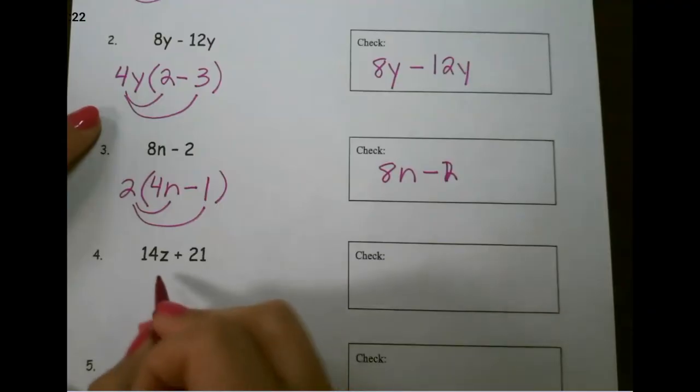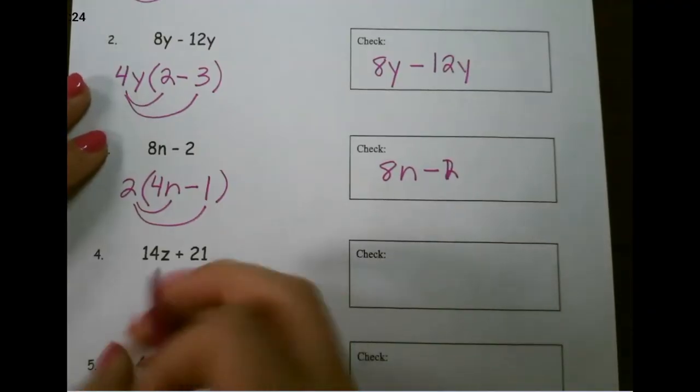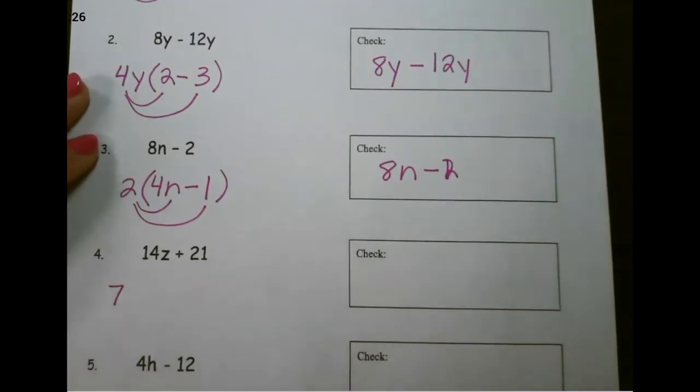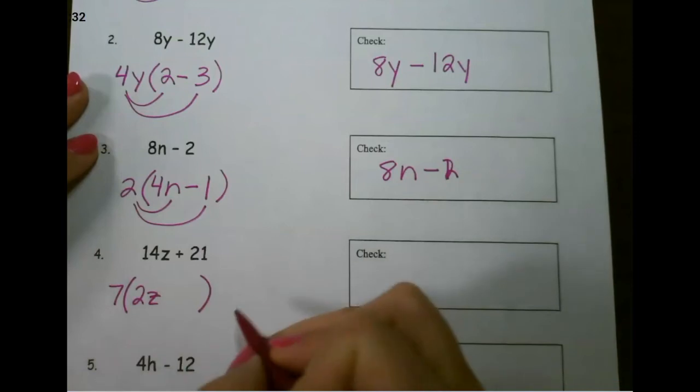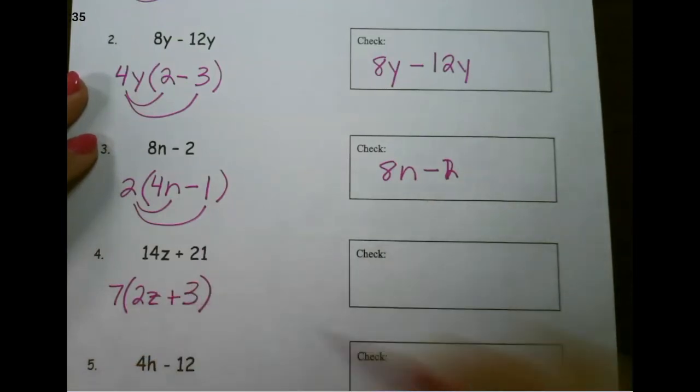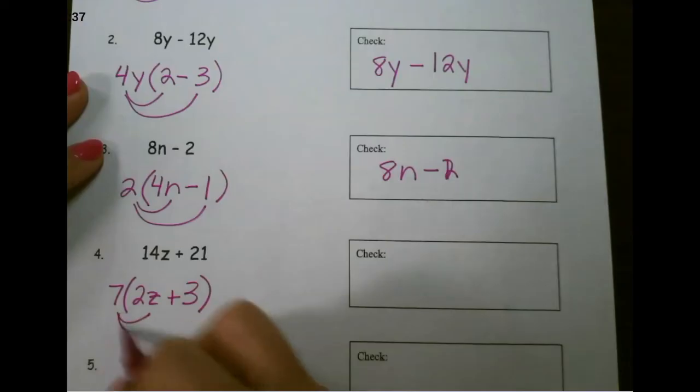For our last example, we have 14z and 21. Greatest common factor would be 7. 7 times 2z would give me 14z, and 7 times 3 would give me 21.